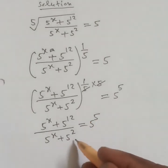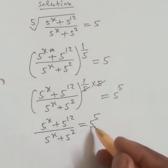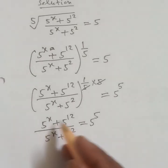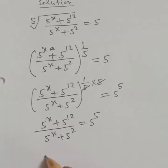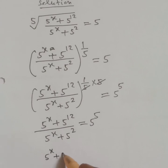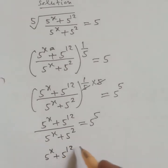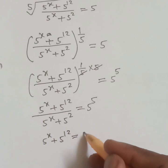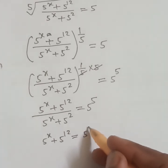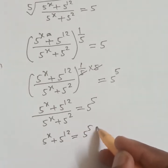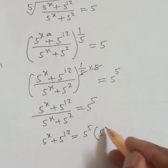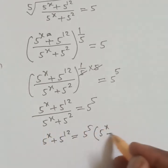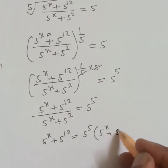Now cross multiply. Then it will be: 5 to the power x plus 5 to the power 12 is equal to 5 to the power 5 into 5 to the power x plus 5 squared.